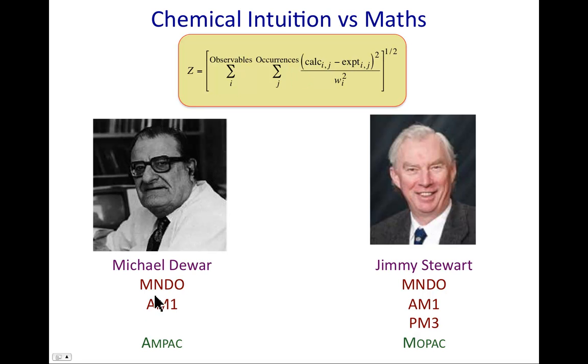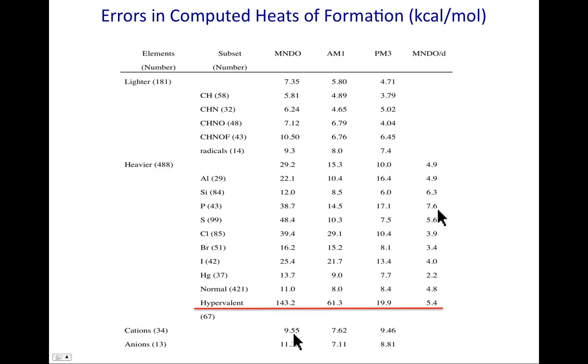AM1 followed the Dewar approach to parametrization, PM3 followed the Stewart approach to parametrization. Once PM3 was published, there was a long exchange of fire between Austin and wherever Jimmy was, of Dewar essentially publishing papers saying, look how lousy PM3 does for this particular problem while AM1 is wonderful, and then Stewart replying and saying actually PM3 does quite well. I would say, after years and years of experience, here is an example of a comparison. These data are a little old, but it gives you a feel for what's going on.